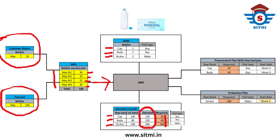In this case, caps are purchased from the supplier, bottle body is also purchased from the supplier, and stickers are made in-house. So cap is a purchased item, body is a purchased item, and stickers are a make item. Based on all this, MRP throws output in the form of a procurement plan and a production plan.